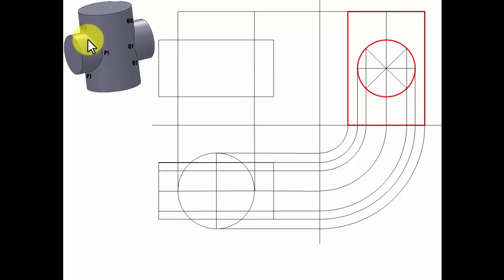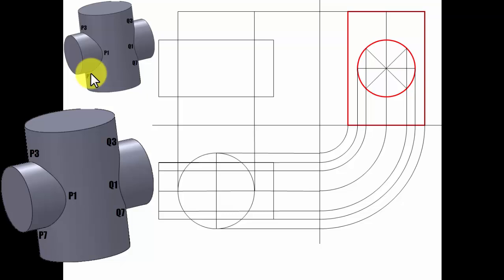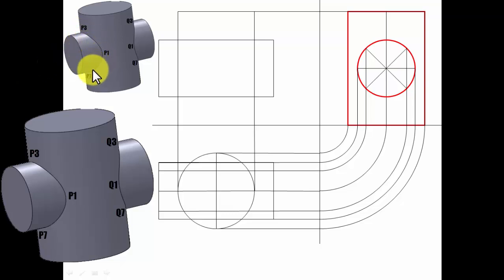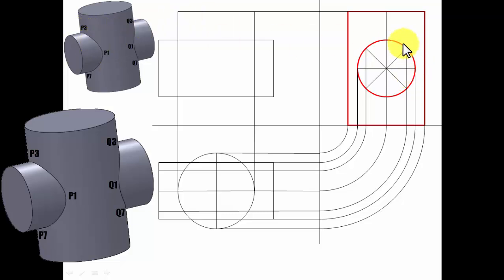Now we focus on the curve of penetration — that is our main focus of attention. Please look carefully at this curve of penetration. This point corresponds to p1, and when you look at the scenario from the left-hand side, this curve appears as a circle. So p1 appears here, p2 here, p3, p4, p5, p6, p7, and p8.